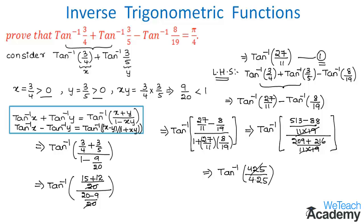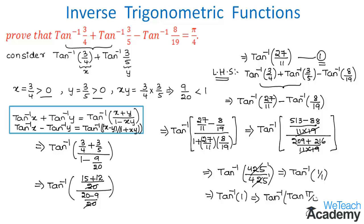Since 425/425 = 1, this simplifies to tan inverse 1, which equals tan inverse (tan π/4). Therefore the result is π/4, which is the RHS. Hence we have proved that tan inverse 3/4 plus tan inverse 3/5 minus tan inverse 8/19 equals π/4.